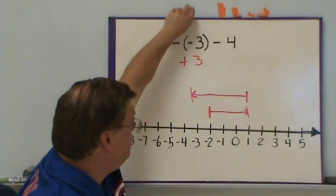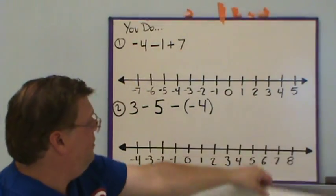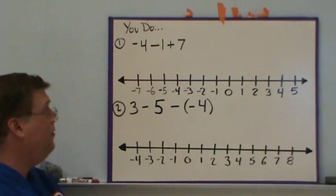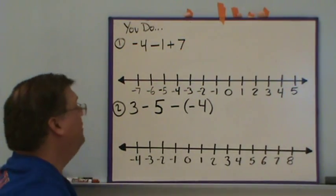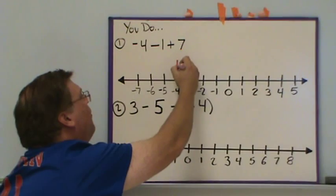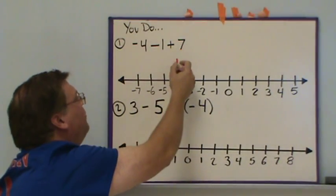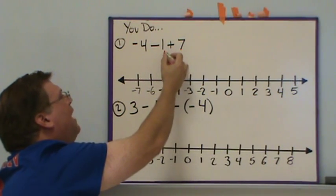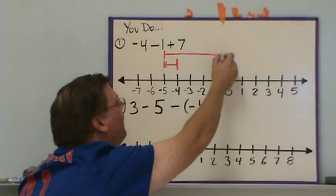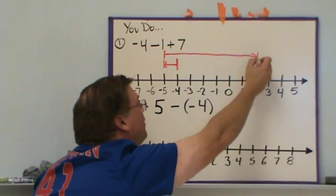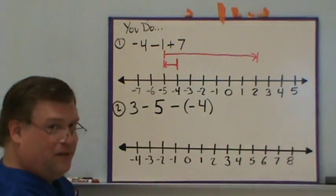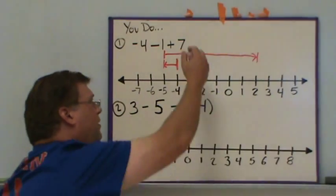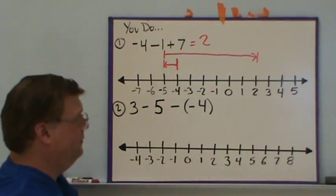In order to learn math, you have to do math. Pause the video and try these two problems. Welcome back. For the first problem, starting at negative four, draw a line. Subtracting one means going left one step. Then adding seven from this starting point — go right seven steps. That is how you represent the problem on the number line. The solution is two, which is where we ended up.